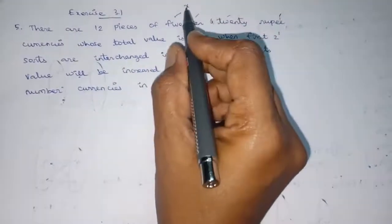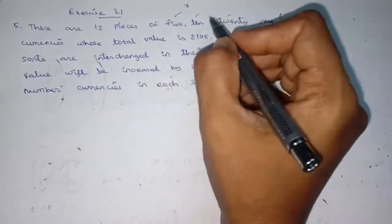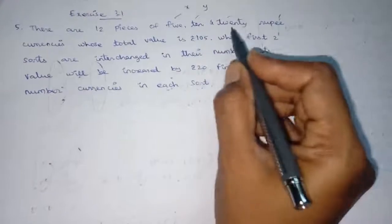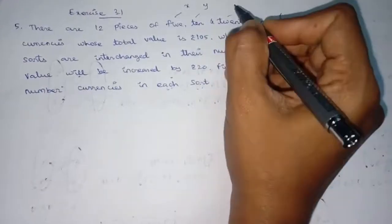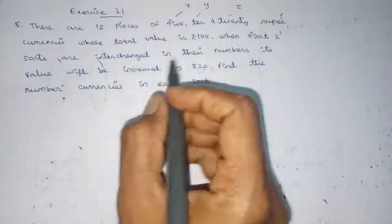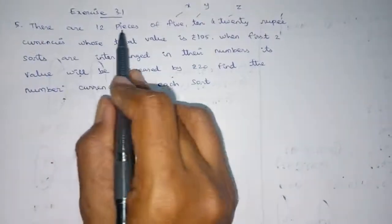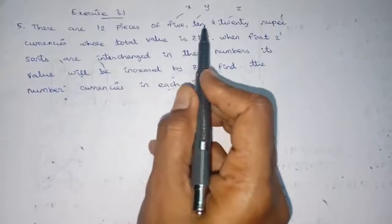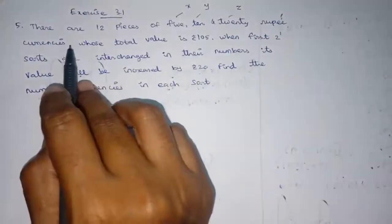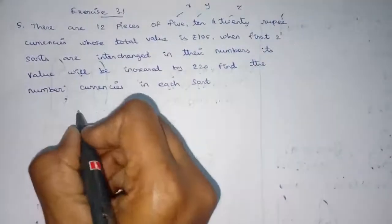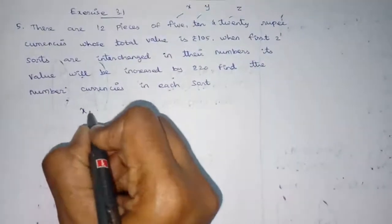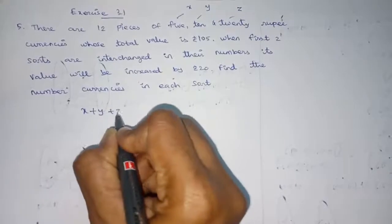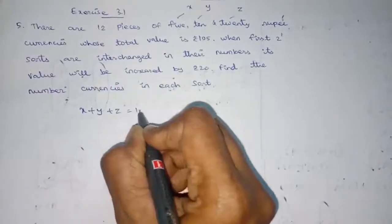We have X for 5 rupee, Y for 10 rupee, and Z for 20 rupee currencies. There are 12 pieces total, so X plus Y plus Z equals 12.